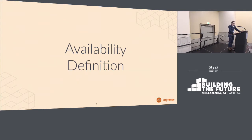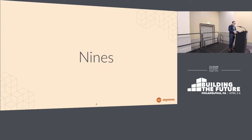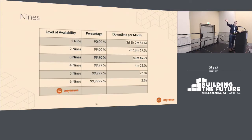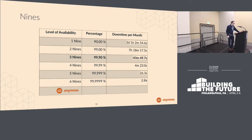The question of what availability is is not as easy to answer, but the most common way to express availability is by applying nines to it. There's a table here using the example of availability per month. Obviously, if you use that relative number in percentage relative to a year, you'll have other downtimes. You can see the more nines you have, the less downtime would be tolerated under a particular uptime requirement. People always ask where the company name comes from — you have one nine, two nines, three nines, and basically any nines. That's where the name Any9s comes from.